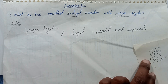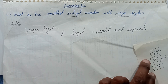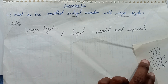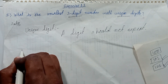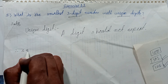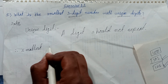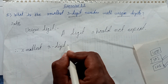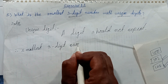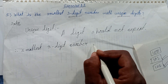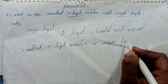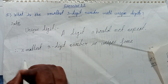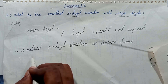We need a number where any digit is not repeated. Therefore, the smallest 3-digit number with unique digits is 102 — using digits 1, 0, and 2. This is the answer.